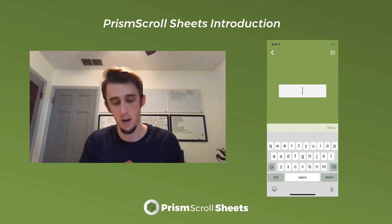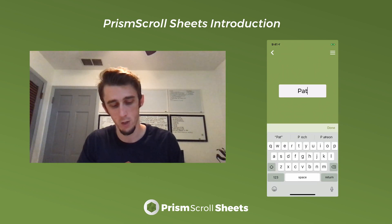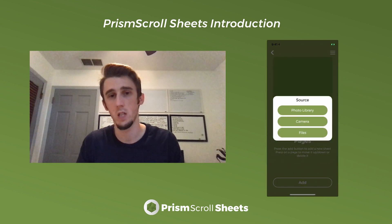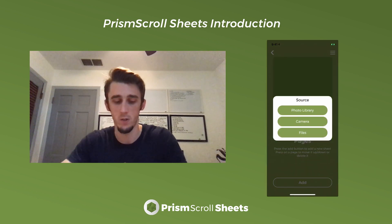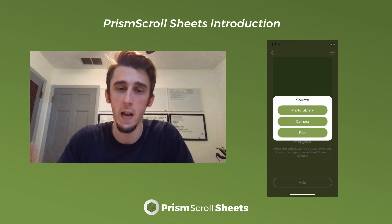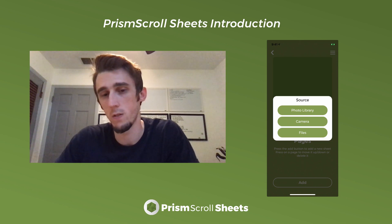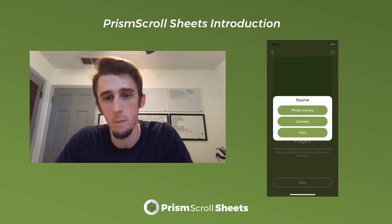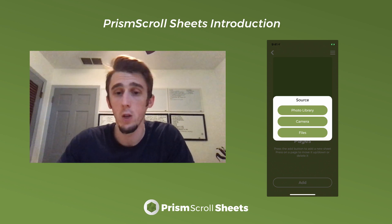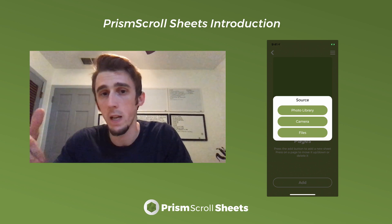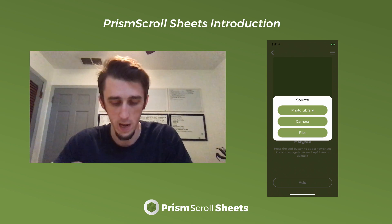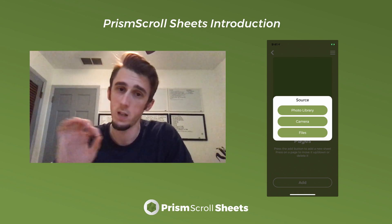Right now I have a Pathfinder sheet that I'm working on. You give it a name, and then there are different places you can get files from — photo library, camera, and files. We're going to add different ways to get things, like Google Drive or Dropbox. In the future, if somebody emailed you a PDF, you'll be able to import it directly from your email rather than having to select it here.